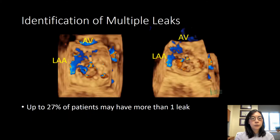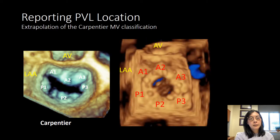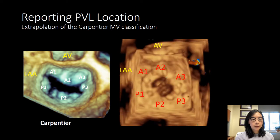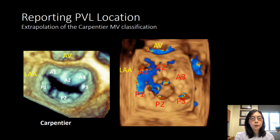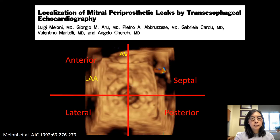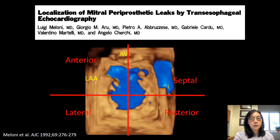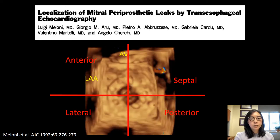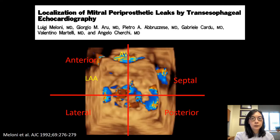Once you've identified your leak, how do you describe it, especially when there are multiple leaks? Up to 27 percent of patients may have more than one leak present. Some have taken the Carpentier mitral valve classification and tried to extrapolate it to a prosthetic valve. However, with prosthetic valves there are no natural landmarks as there are on a native valve, so there could be huge variability between individuals in reporting leak location. Others have tried breaking the valve into quadrants — anterior, septal, posterior, and lateral — but these quadrants are quite large and the lack of precision can make it challenging to direct your interventionalist.